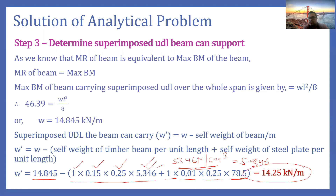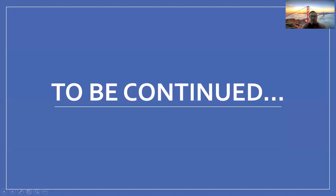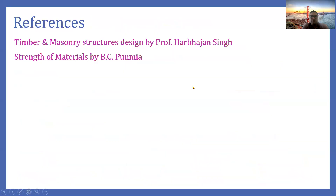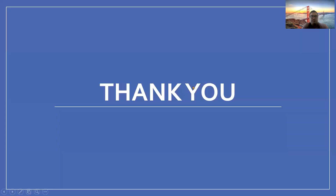So 14.25 kN/m is the external UDL which the beam can support safely. That concludes our numerical and our lecture. We will continue the discussion in the next lecture. Thank you.